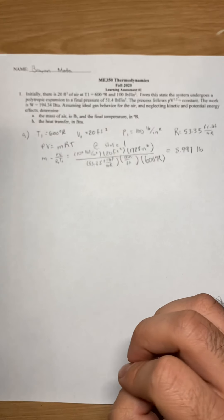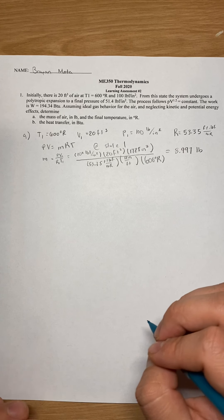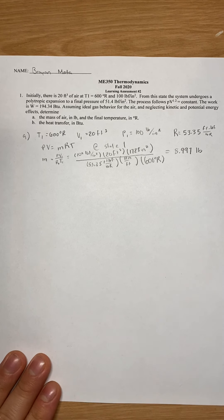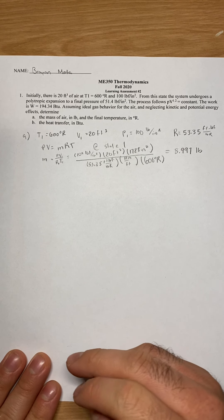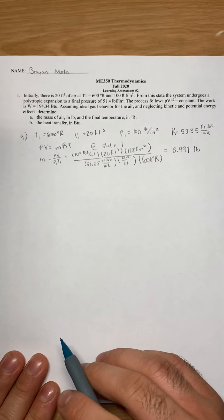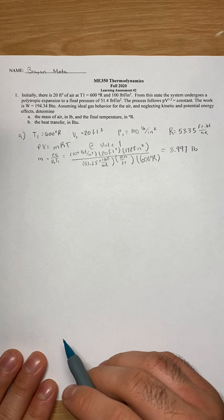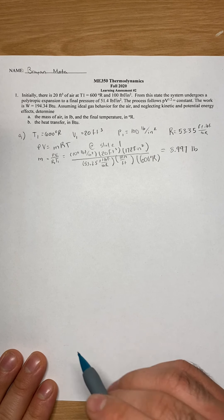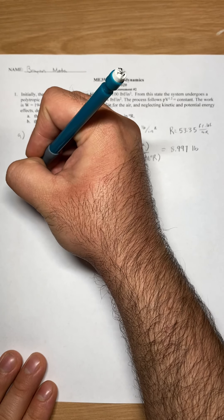Now that we know our mass, we can solve for our second temperature, our final temperature. And we can use the same equation, PV equals MRT, except this time we'll use it at state two.